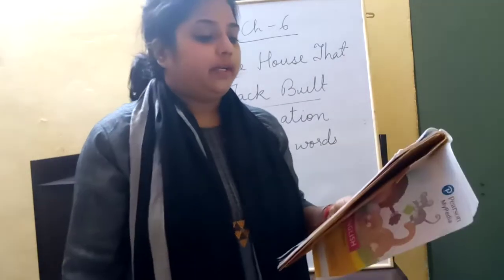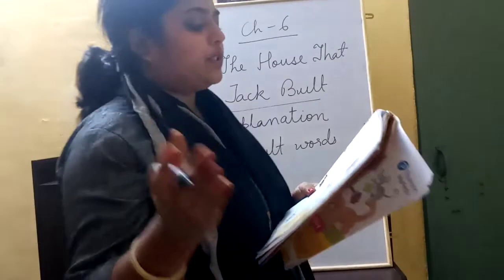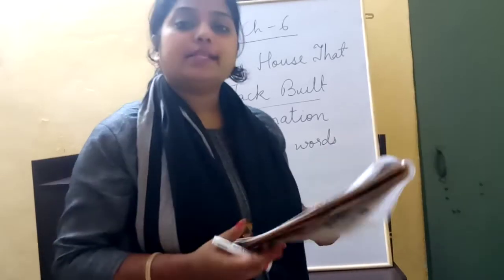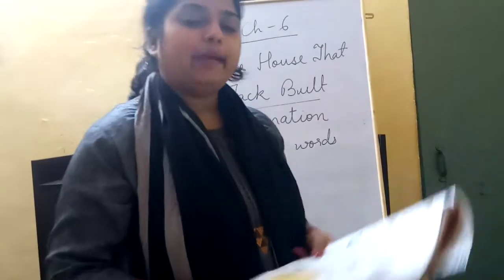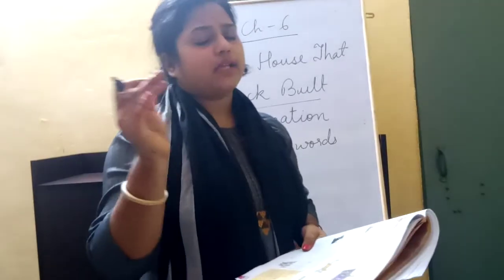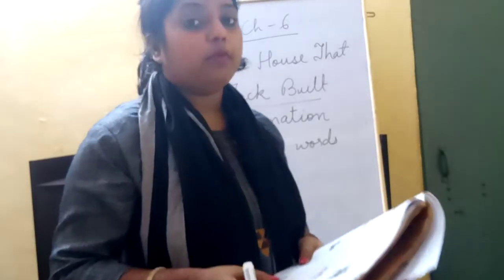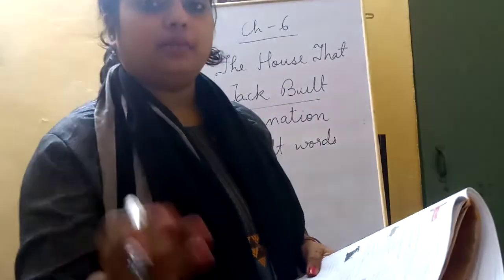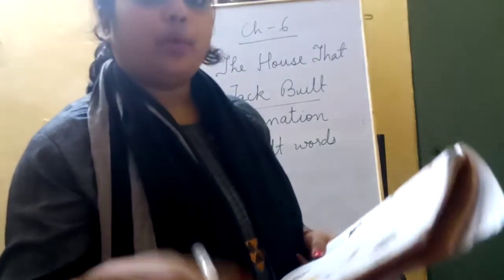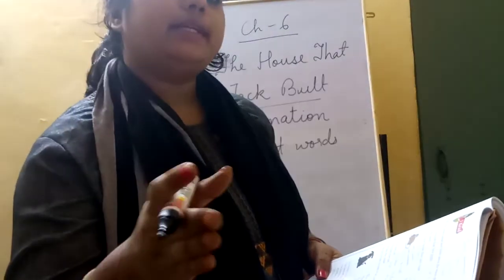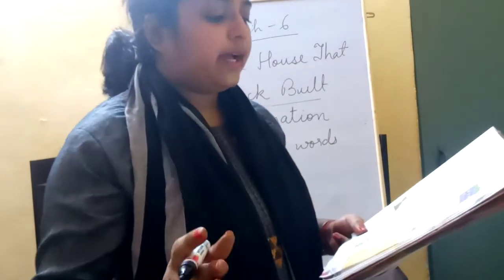This is the house that Jack built. Now, which is the house? The picture of this house is given here. This is the malt — malt is a type of grain that has been kept in water for some time and then dried. So this is the house which Jack, the name of a person, built. And this is the malt — the dried grain that lay in the house that Jack built.